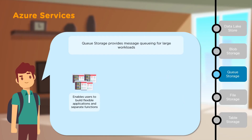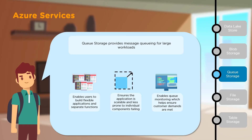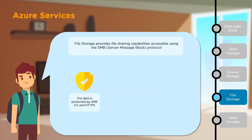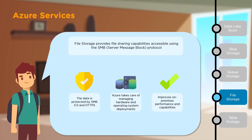Next, we have Queue Storage — a message queuing system for large workloads. This allows users to build flexible applications and separate functions, ensuring individual components will not fail and that your application remains scalable. Queue Storage also provides queue monitoring to help ensure customer demands are met. Then we have File Storage, which enables file sharing with the help of the SMB protocol or Server Message Block Protocol. This data is protected by SMB 3.0 and the HTTPS protocol. Azure takes care of all hardware needs and OS deployments, and it also improves on-premises performance.